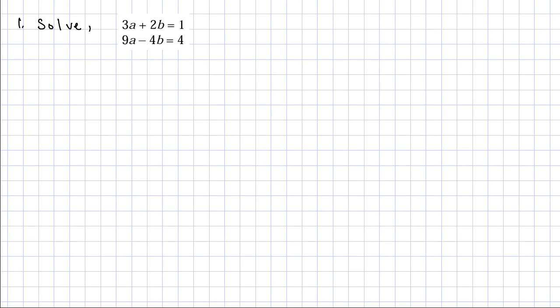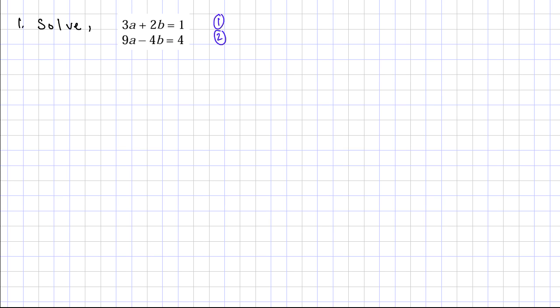This video is on solving simultaneous equations where the equations are linear. I need to solve the equations 3a plus 2b equals 1 and 9a minus 4b equals 4. I'll start by labelling my equations: equation 1 and equation 2. For this first example I'm going to use the method of elimination.